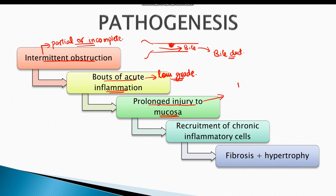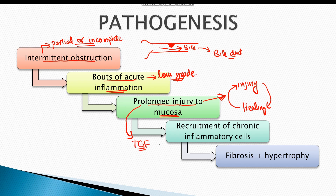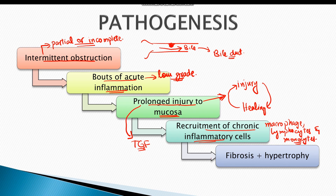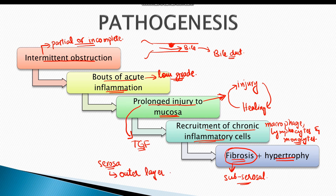These repeated bouts of low-grade inflammation lead to prolonged injury to the gallbladder mucosal cells, resulting in a cycle of injury and healing. The prolonged injury to mucosa also releases certain chemicals such as tissue growth factors. These growth factors and other chemical mediators recruit chronic inflammatory cells such as macrophages, lymphocytes, and monocytes, ultimately leading to fibrosis and hypertrophy of the gallbladder wall. The fibrosis is typically subserosal, meaning it is below the serosa — the outer layer of the organ.